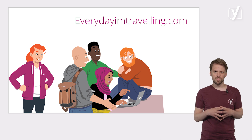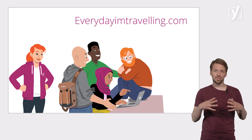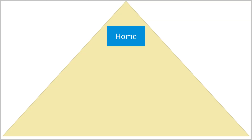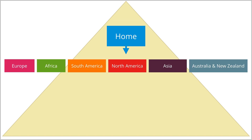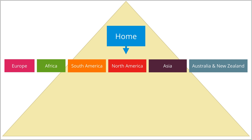So, let's see how this works for EverydayImTraveling.com. What might our travel blog's pyramid look like? Well, maybe something like this. Again, the home page is at the top. And then we have category pages. So what categories make sense? We know we have several contributors who travel all over the world. So using the continents might make sense. So we'd have a category for Europe, Africa, South America, North America, Asia, and Australia and New Zealand, because that's probably what people would be looking for more than Oceania.